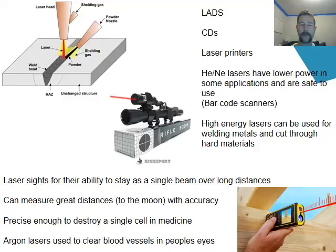We can use lasers for scopes, for rifles for example. And they can be used for measurement as well, such as the measurement device used in the bottom of this slide presentation. Lasers can also be used to clear blood vessels in people's eyes, due to the great accuracy and control that you can have over the laser light.